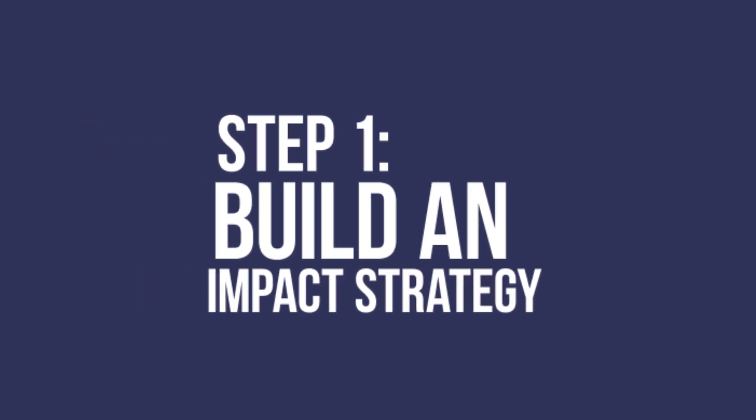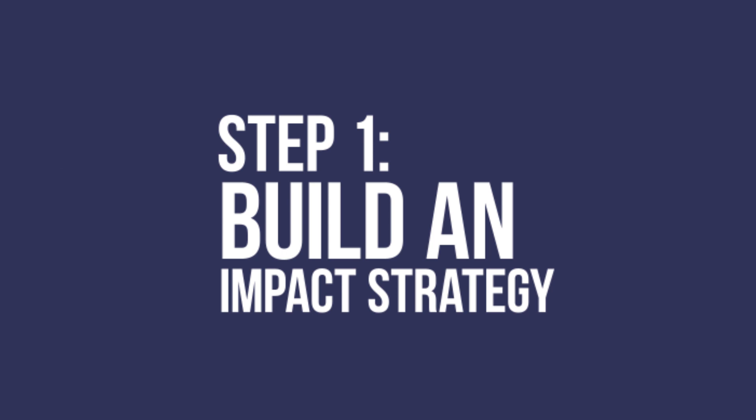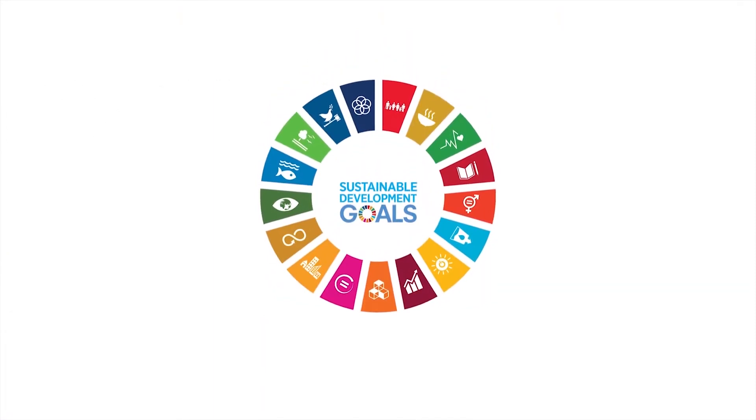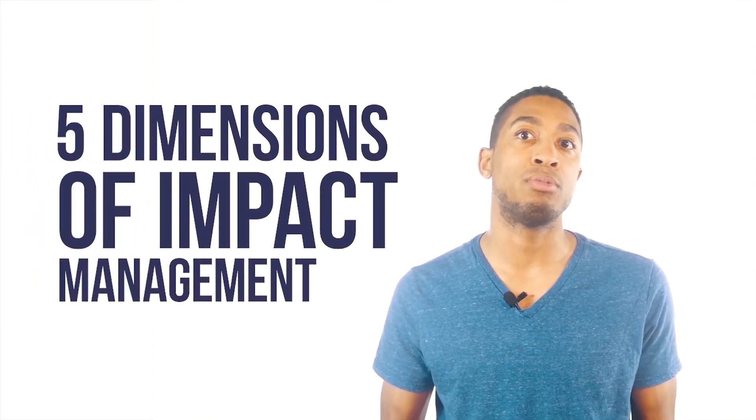Step 1: Build a business strategy that combines financial returns with environmental and social impact goals, based on built-in global standards like GRI, CDP, SDG, and guided by the five dimensions of the Impact Management Project.